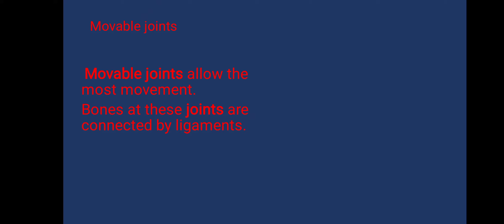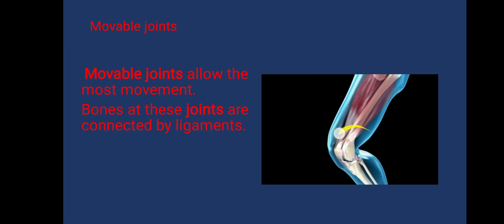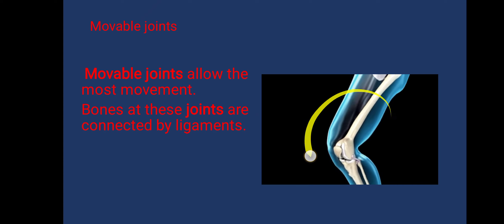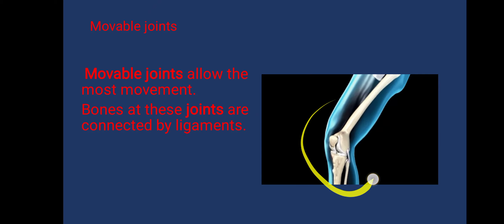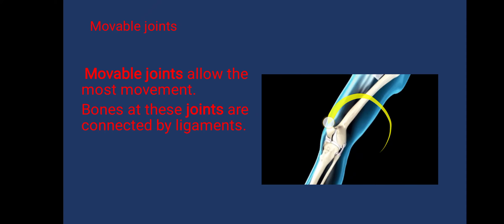Movable joints allow the most movement. Bones at these joints are connected by ligaments, which hold the bones together at the joint.